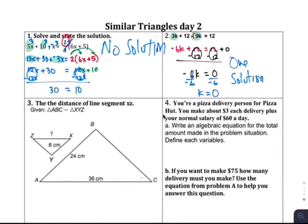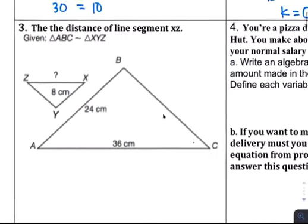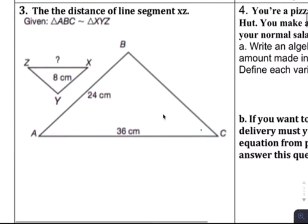This is tonight's homework. I know a lot of you are out for your field trip, so I'm going to explain as much as I can. A lot of it we did in class. It's always the big triangle over the small triangle, right? A number or a variable from a big triangle over the small triangle.